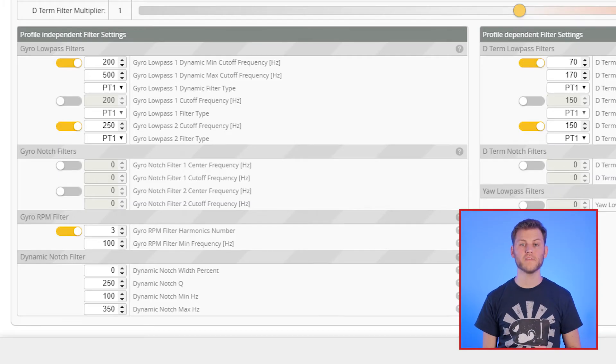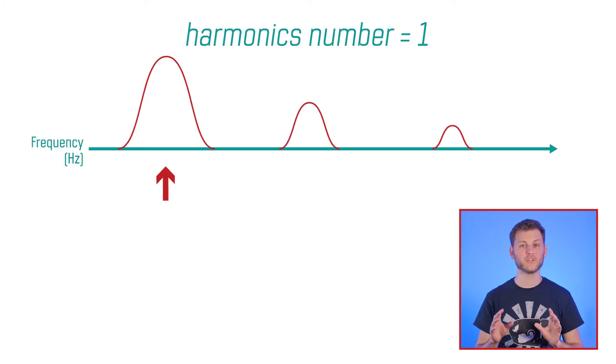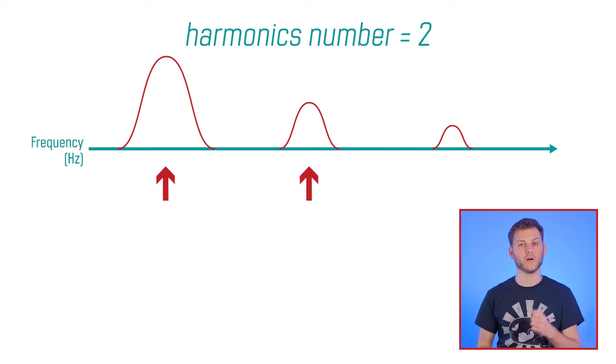The first setting of the RPM filters is the amount of harmonics you want to filter. You can enter a value between 1 and 3. 1 means that you only filter the base noise of your motor, called the first harmonic or the fundamental. A value of 2 will also filter the second harmonic, and of course, a value of 3 will filter the first, second, and the third harmonic.